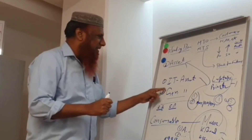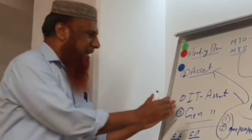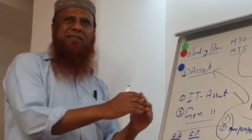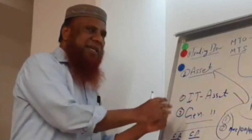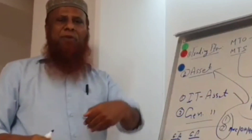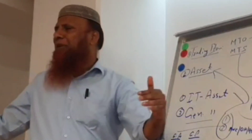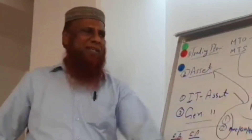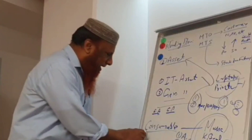Now after this part — understand general asset. General asset is something you cannot take with you, like a laptop or phone that you can't take. General asset means building, furniture — items here in place. So this part is okay.